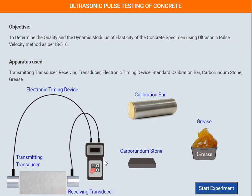The basic principle is that an ultrasonic pulse is generated by a transducer. This transducer generates an ultrasonic pulse and a series of waves travels from the transmitting transducer at one end to the other end. The waves can be longitudinal waves, shear waves, surface waves, or Rayleigh waves.